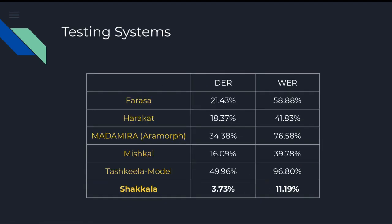A sample of the results for each of the systems is shown in this table. We can clearly see that the neural network approach outperforms the traditional rule-based approaches by a significant margin, where Shakkala has 3.73% diacritic error rate and 11.19% word error rate, and the best rule-based system, Mishkal, has 16.09% diacritic error rate and 39.78% word error rate.